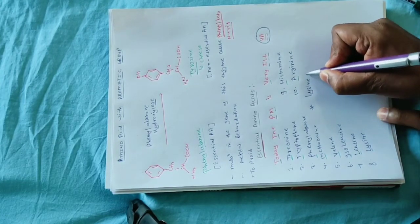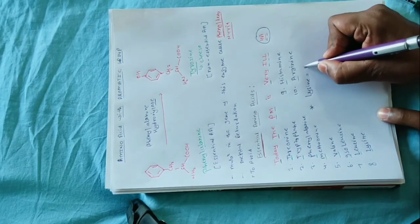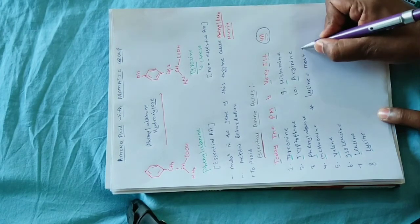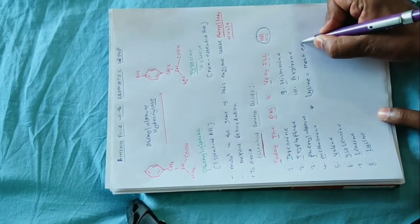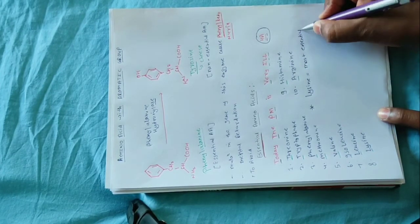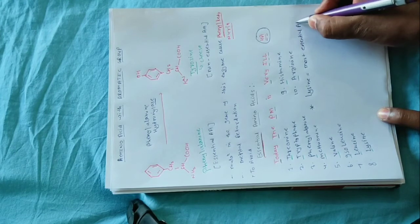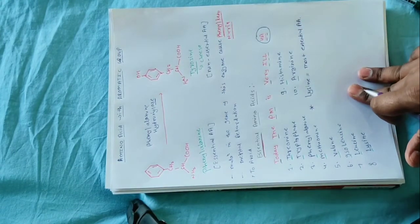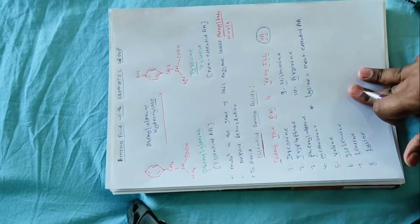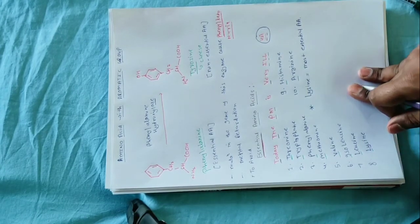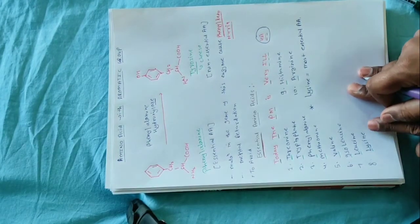Lysine जो है, यह सबसे most essential amino acid है। सबसे ज़्यादा important essential amino acid कौन सा है — Lysine। यह हमारे body में food के रूप में intake करना सबसे important होता है।